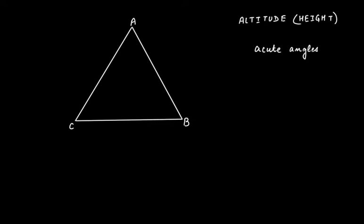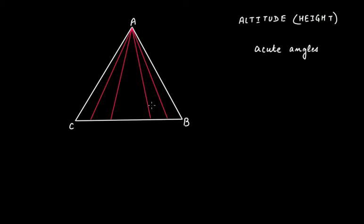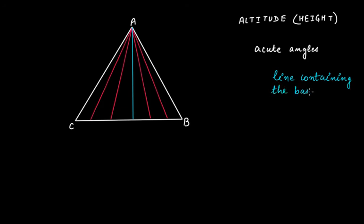If you join this base, or the opposite side of this vertex, you can draw many lines — this line, this line, this line, and so on. But there will be one and only one line that will be perpendicular on the line containing the base. It's important that we focus on 'line containing the base' — the reason will be clear in a few moments.